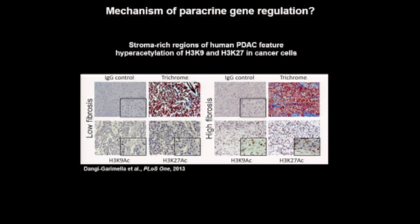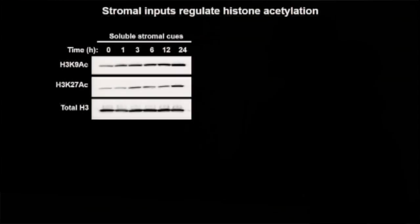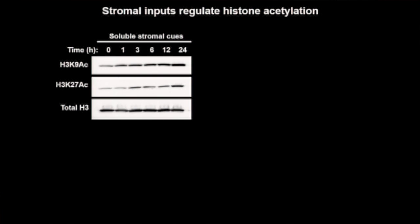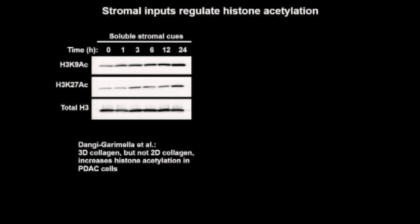This led me to think maybe stromal cues regulate the pancreatic cancer epigenome, and histone acetylation in particular, to explain the gene expression changes downstream of stromal signals. I took conditioned media from patient-derived stromal fibroblasts, put them onto pancreatic cancer cells, and measured levels of histone acetylation globally by western blots on acid-extracted histones. Over a time course of exposure to soluble stromal cues, both H3K9 and H3K27 acetylated histone marks increase over time. Growing cells in 3D collagen also increases these modifications, and my stromal culture system combines both 3D collagen and soluble stromal cues.